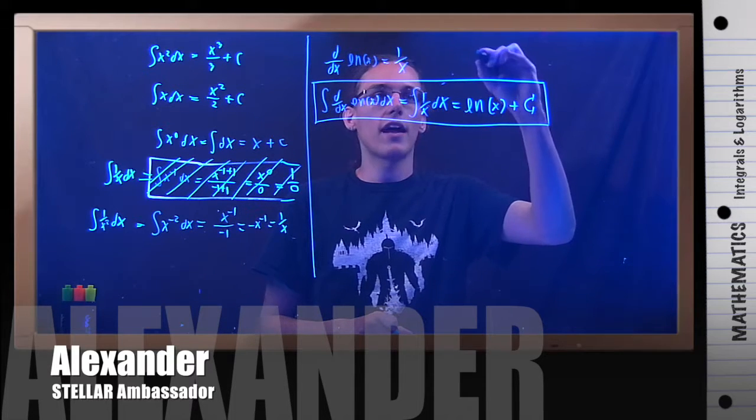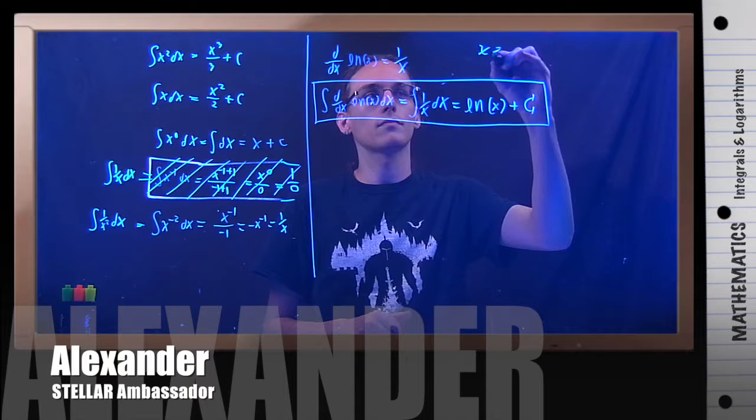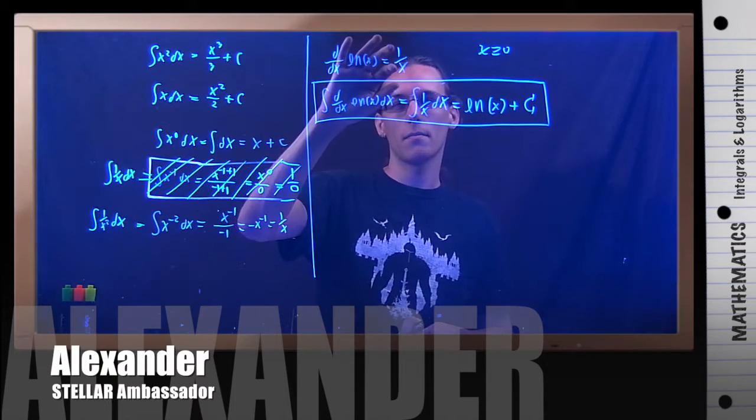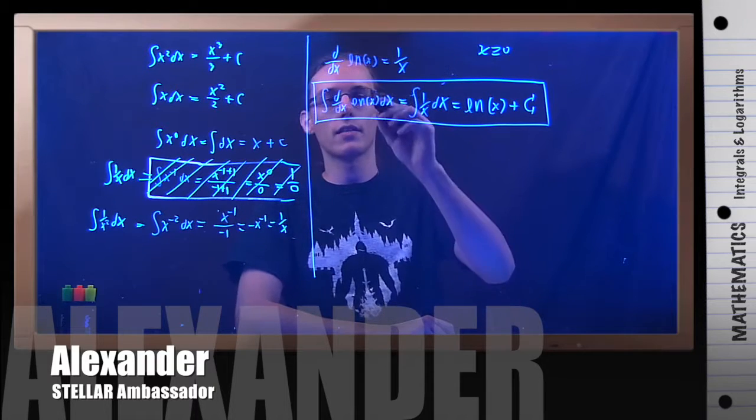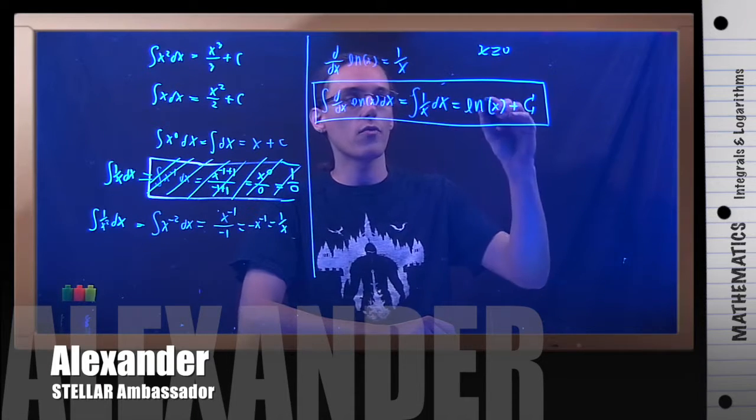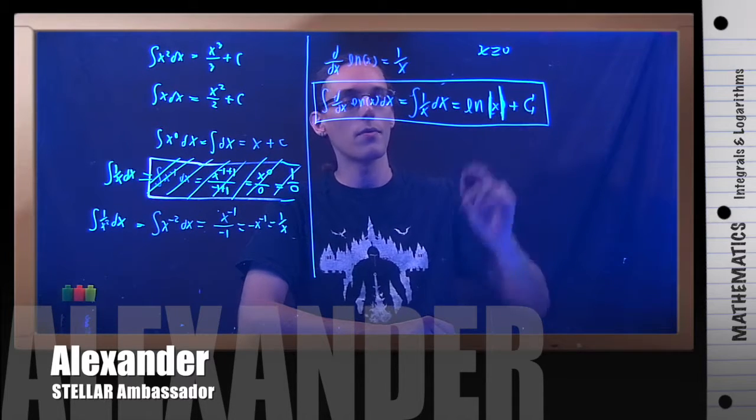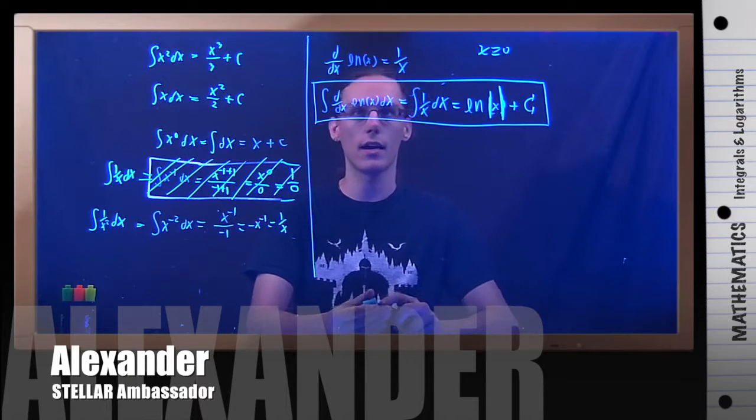Now I've been doing all of this for x greater than 0. I've been assuming that. But of course, I could plug negative numbers into 1 over x, right? So another thing that makes it complex is actually, if I integrate 1 over x, there needs to be absolute value bars here. Remember, you can't put negative numbers inside a natural log.